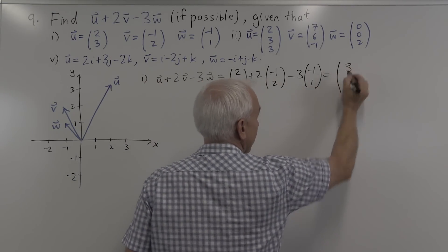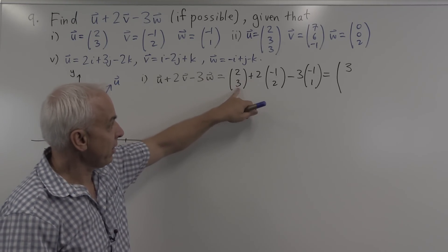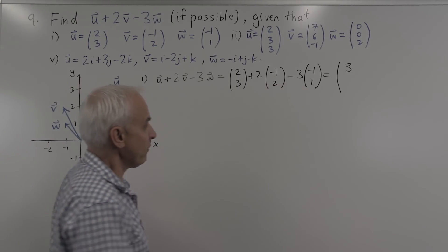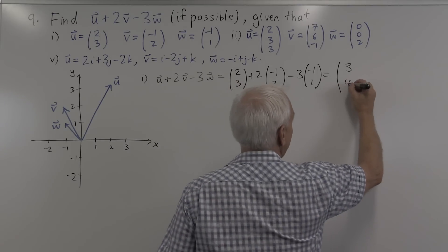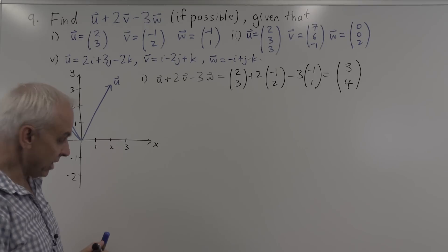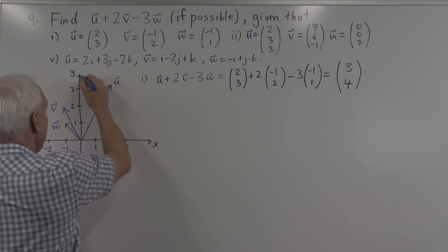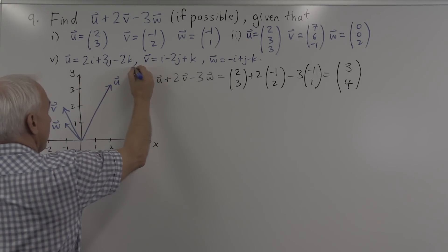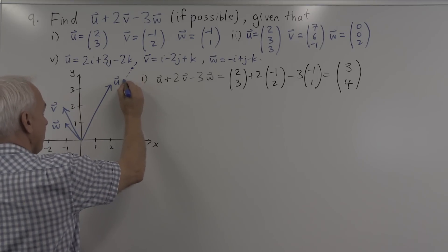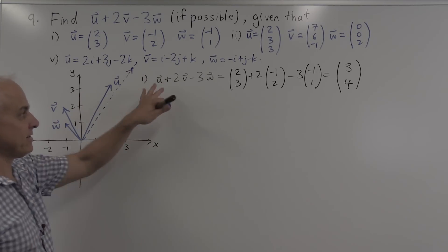And the second component, there's a 3 here, a plus 4, and a minus 3 for a total of 4. So there's the required result. It's the vector (3,4), which would be around here. So if we call whatever this vector is, let me put a dotted line like that. That is the vector that's this combination.